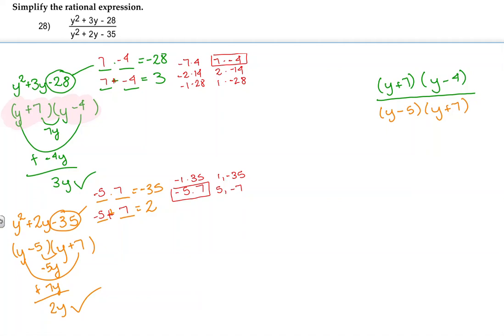And here we can see that the y plus 7 factor on the numerator and the y plus 7 factor in the denominator cancels out, leaving us with our answer of y minus 4 over y minus 5. And that is the simplified form of number 28.